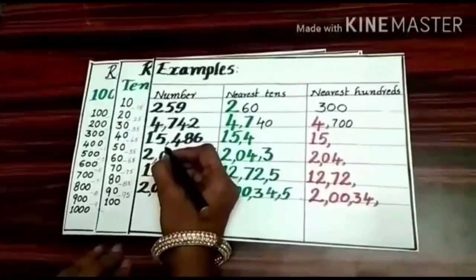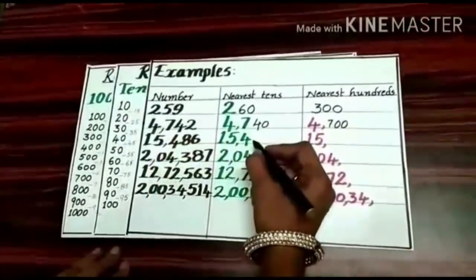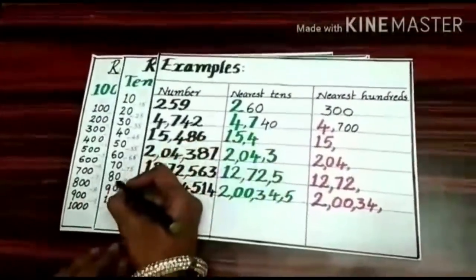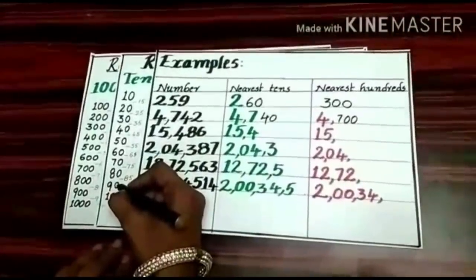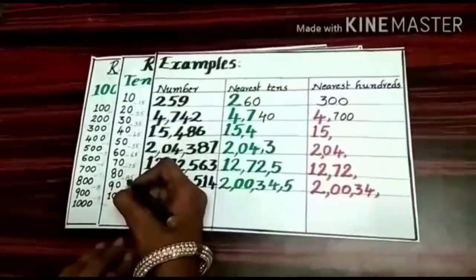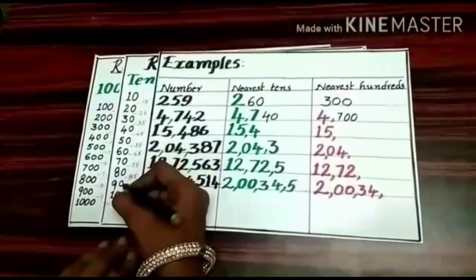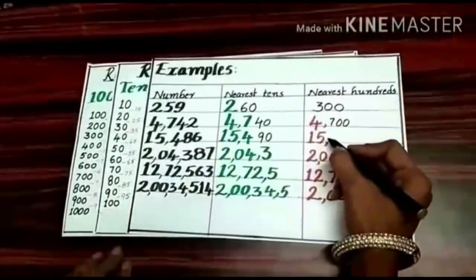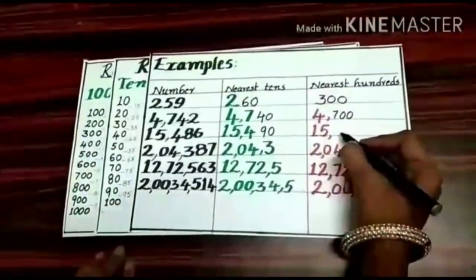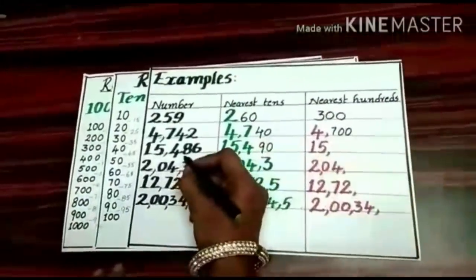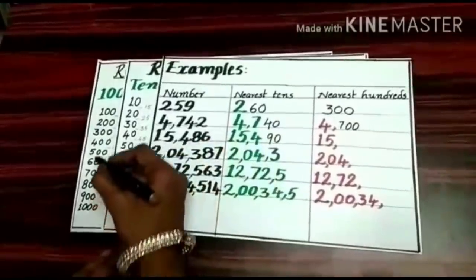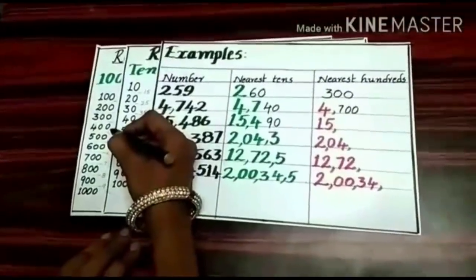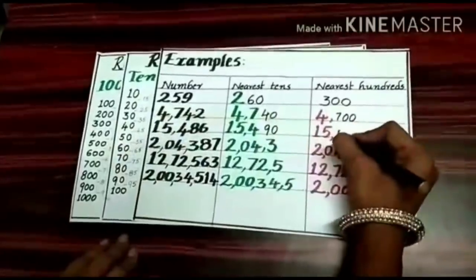This is a 5-digit number. We have to round off to the nearest 10s: 86 lies between 80 and 90, and it is more than the middle number, so round up to the next 10 — that is 90. Now round the same number to the nearest 100s: 486 lies between 400 and 500, and it is more than the middle number, so round up to the next 100 — that is 500.